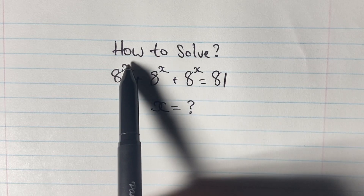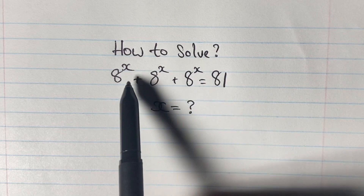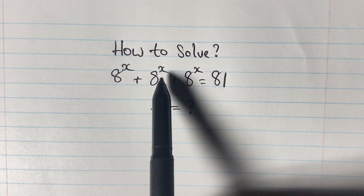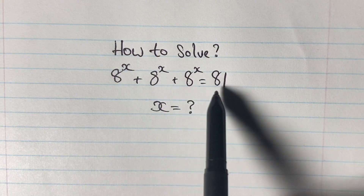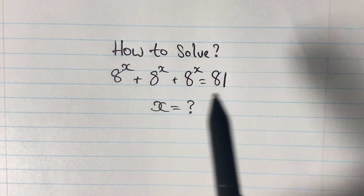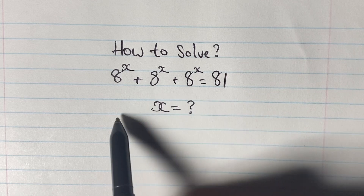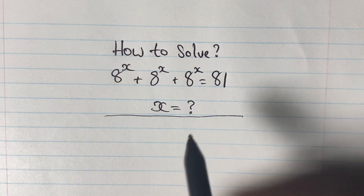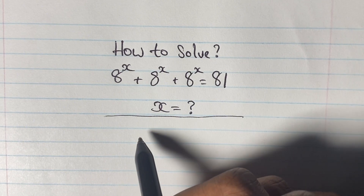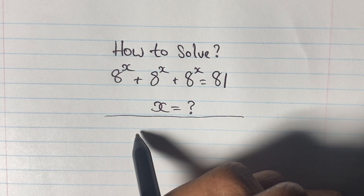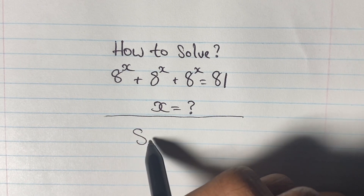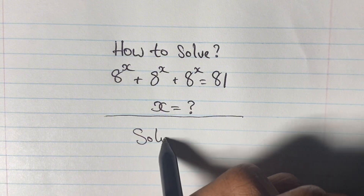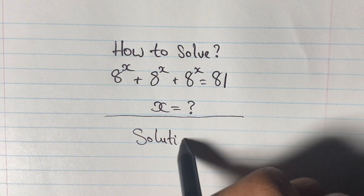Greetings again everyone, welcome back to my channel. Here we're going to solve another equation where we have 8 to the power of x plus 8 to the power of x plus 8 to the power of x is equal to 81, and we are given to find the value of x.